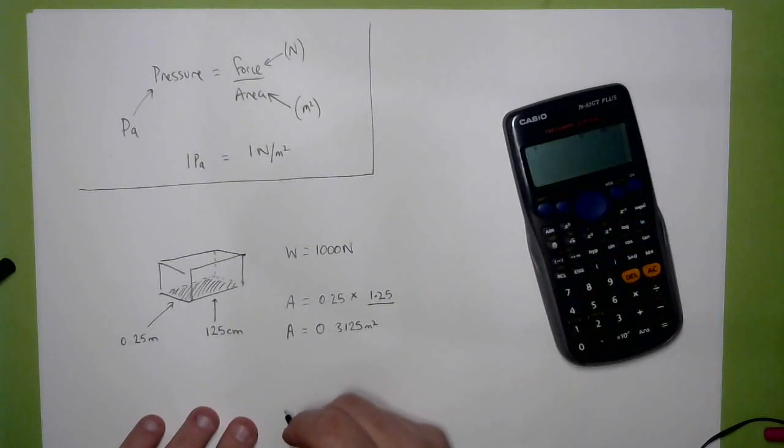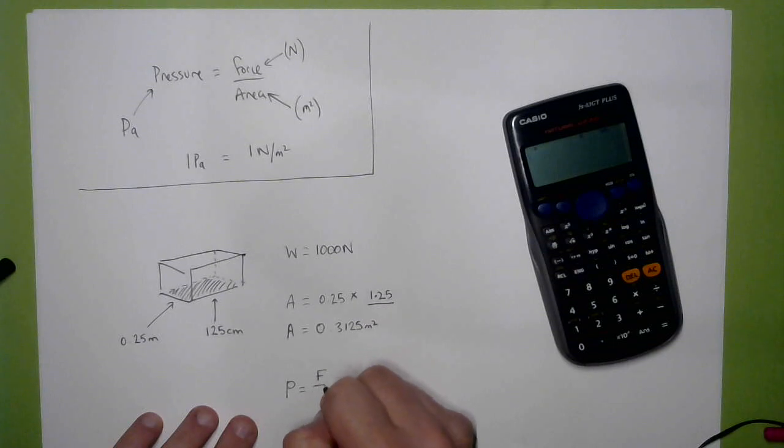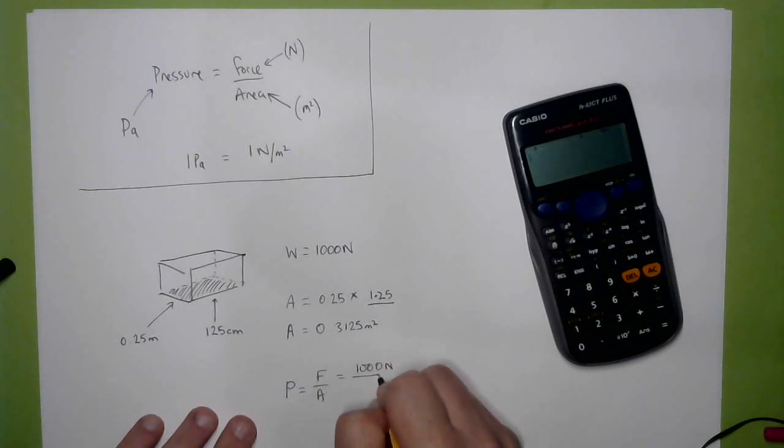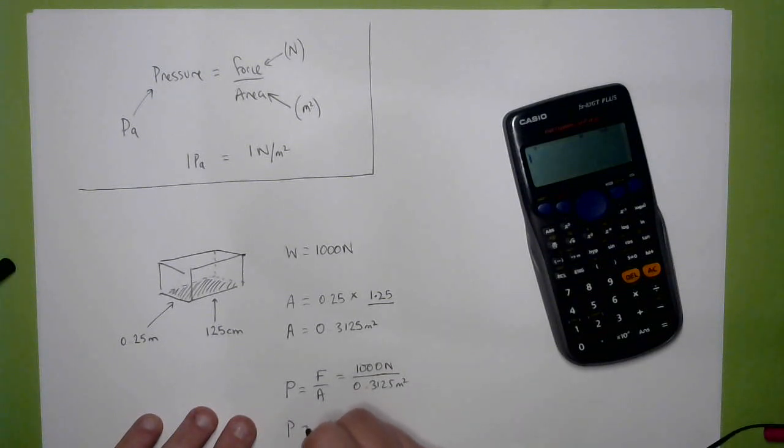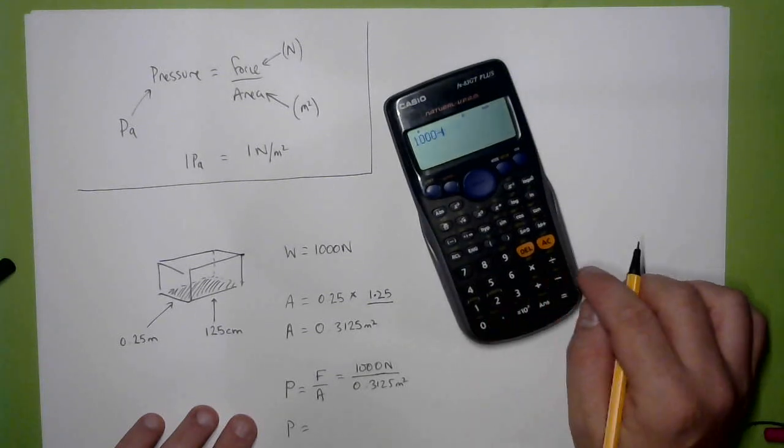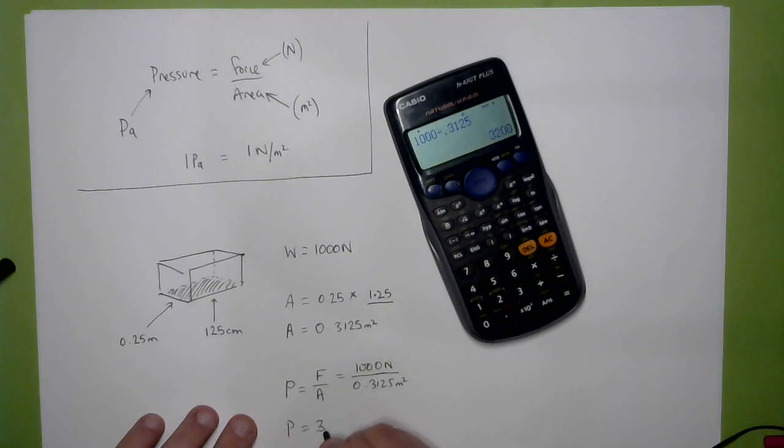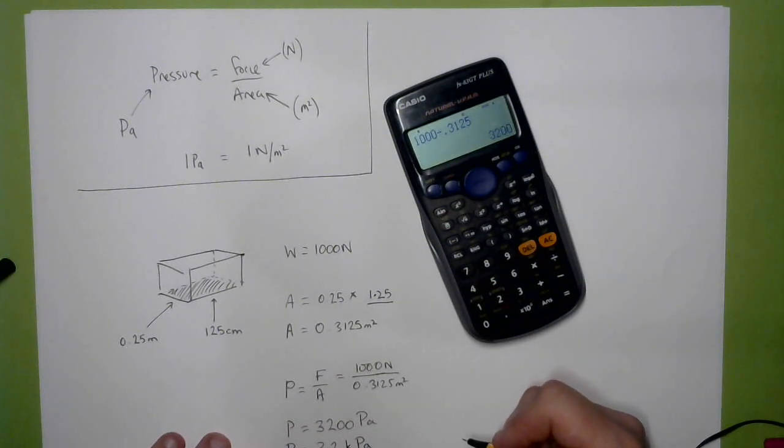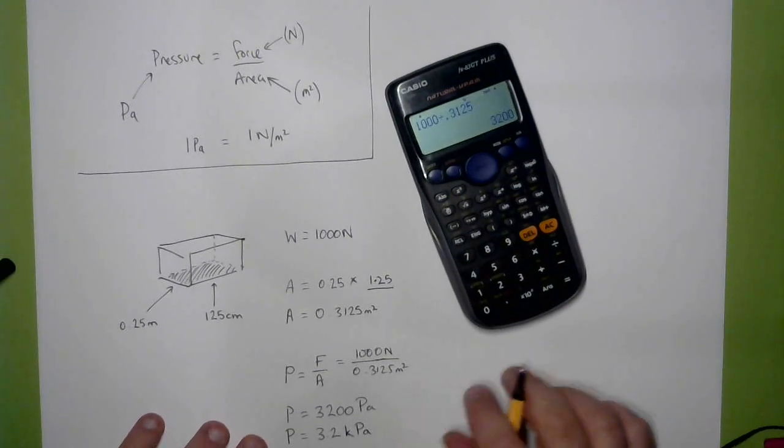So the pressure that this box will exert on the floor is, the pressure is force over area, the force is 1000 Newtons, the area is 0.3125 square metres. That's a pressure of 1000 divided by 0.3125, which is 3200 pascals, or 3.2 kilopascals. So that's one example.